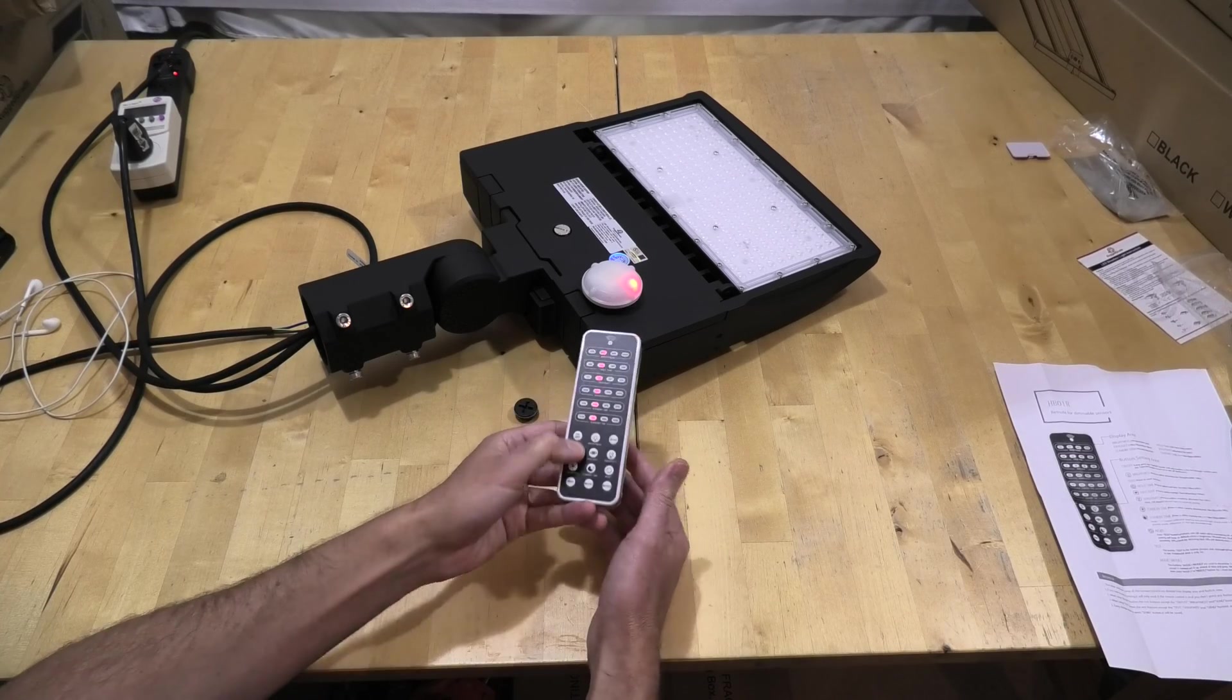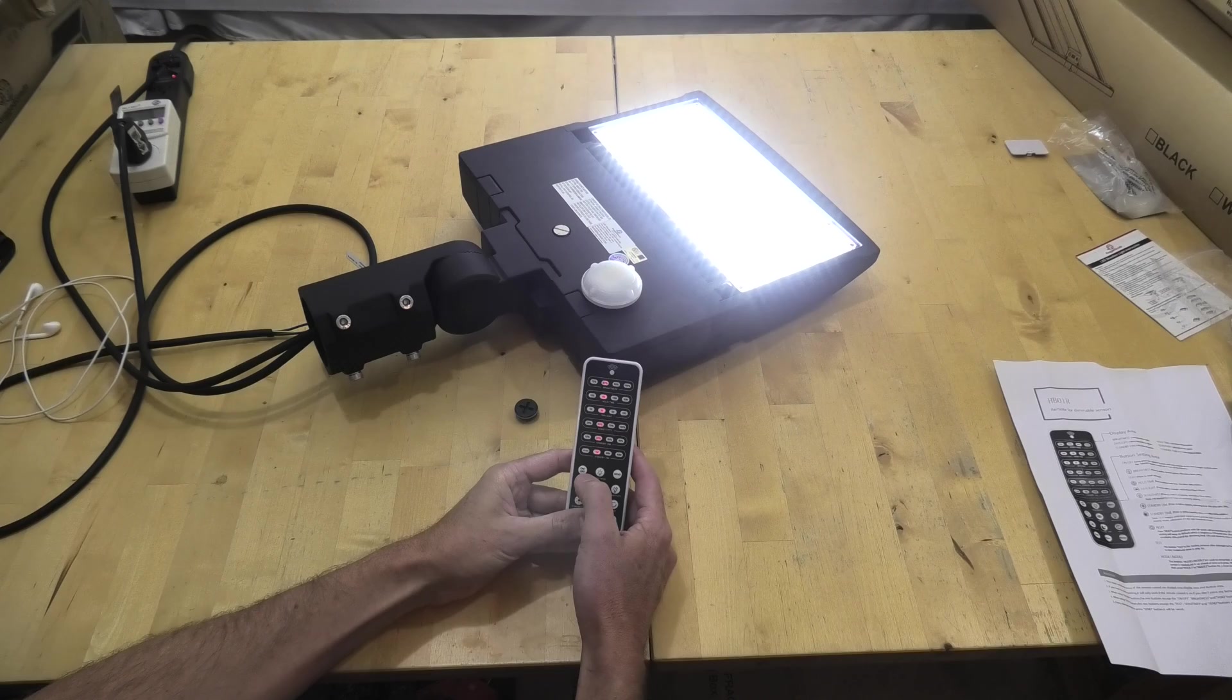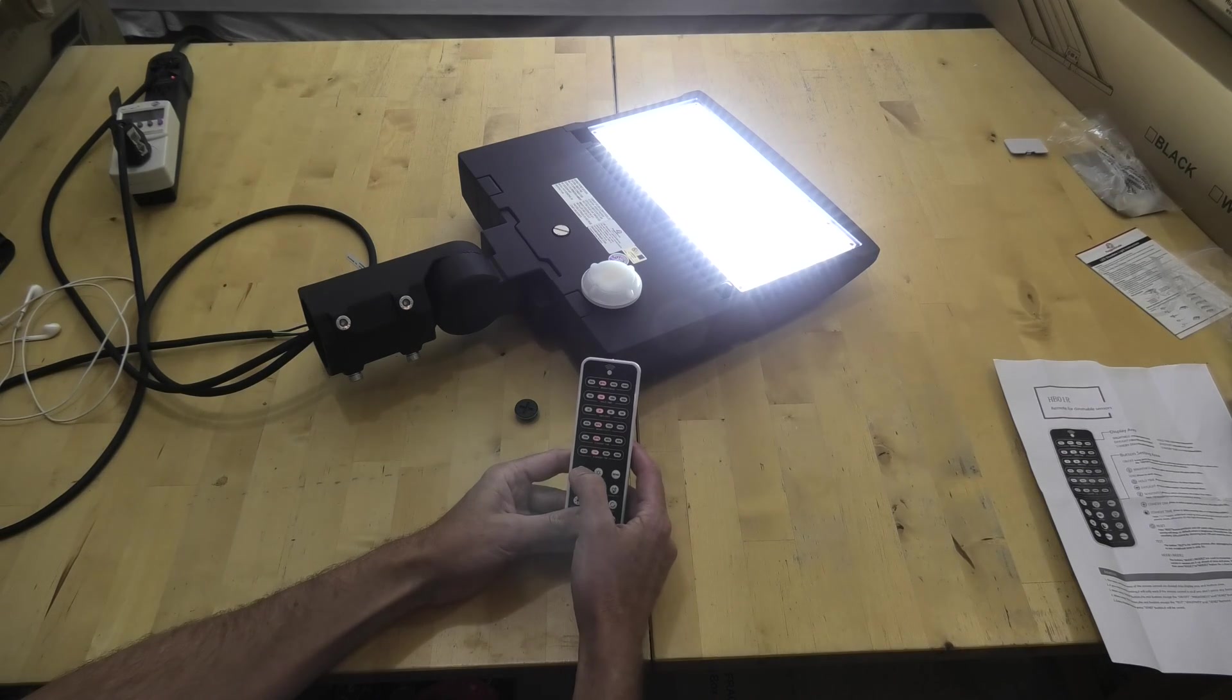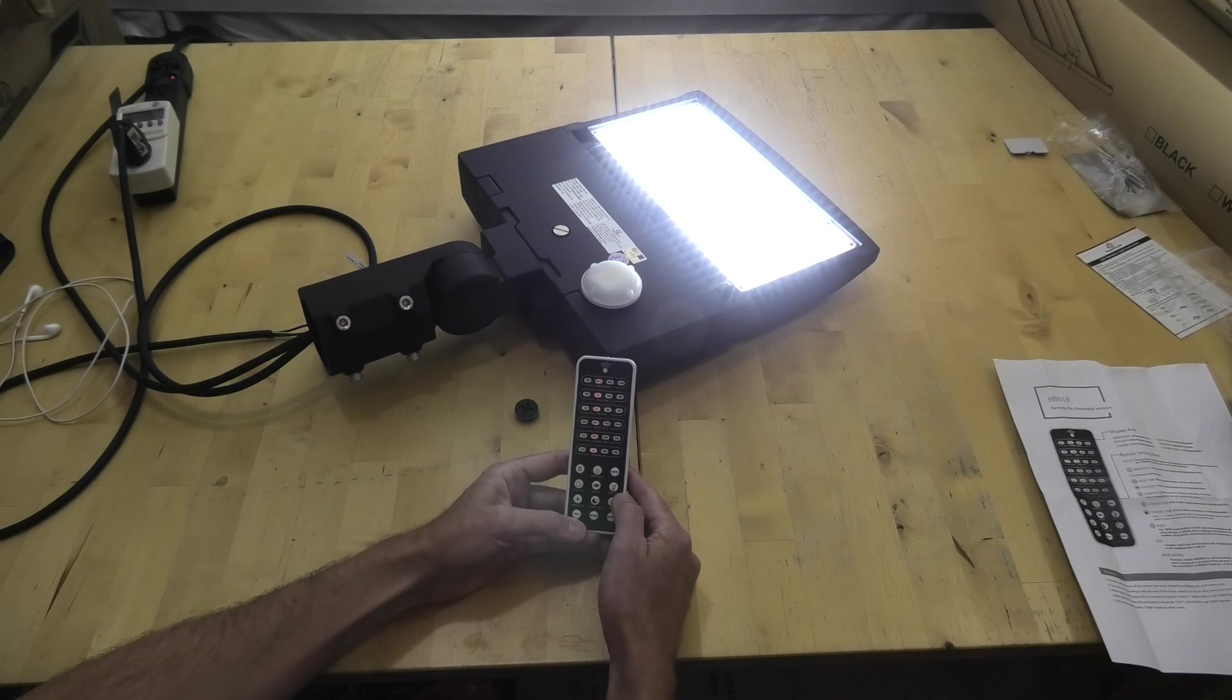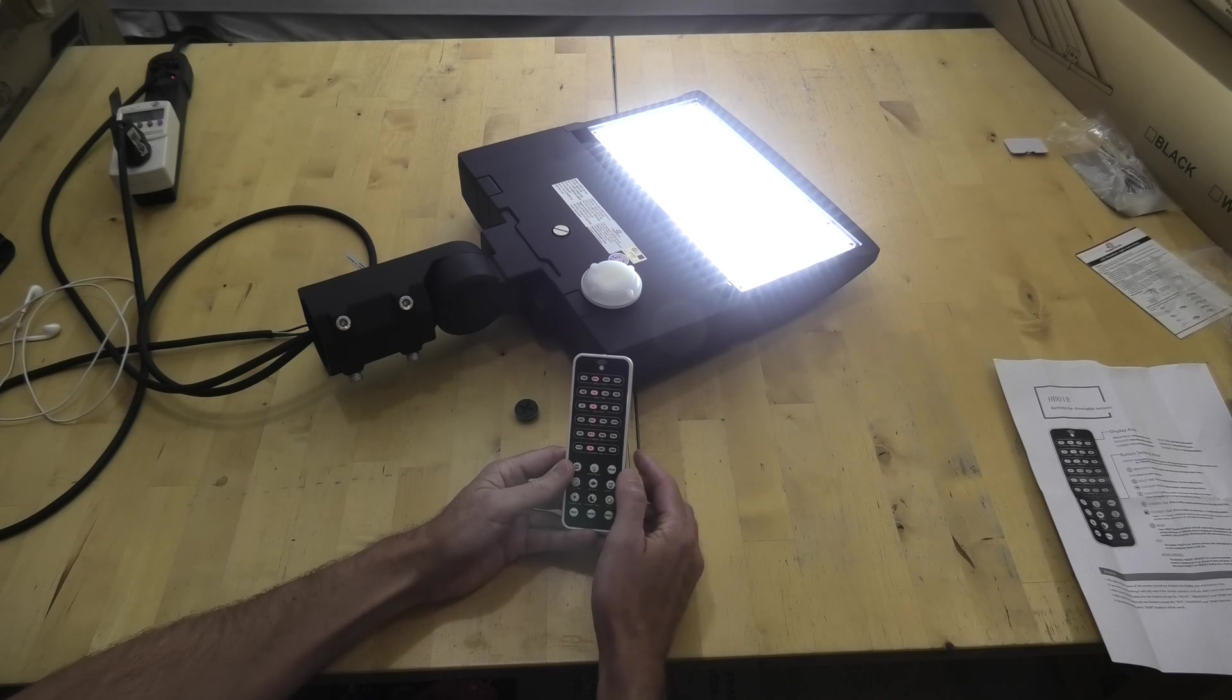Then we're going to turn it back on again here. It's a long press on the on-off button to do that. The short on-off is just for the remote. So that is how you program it.